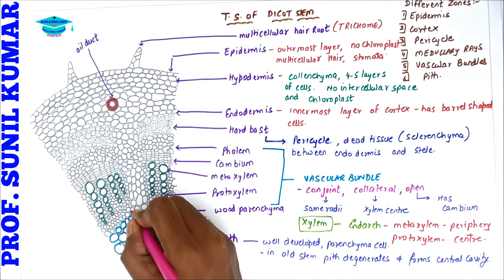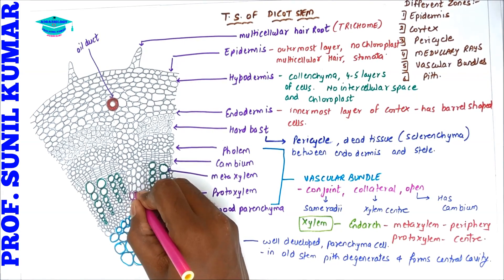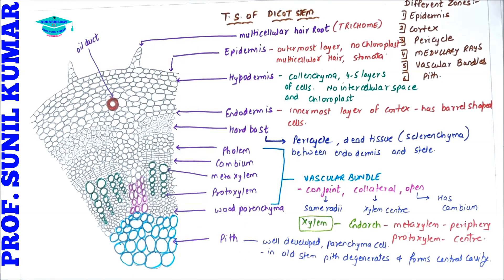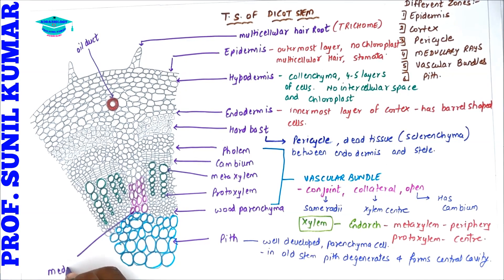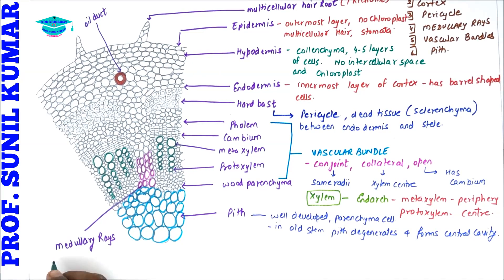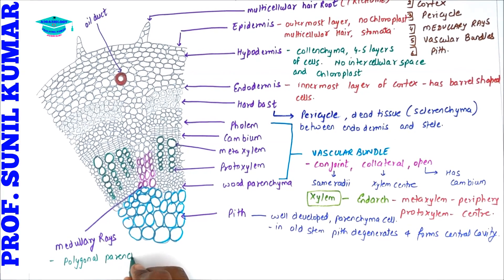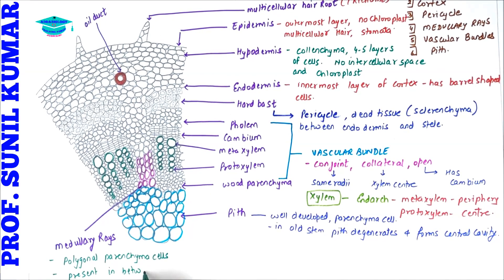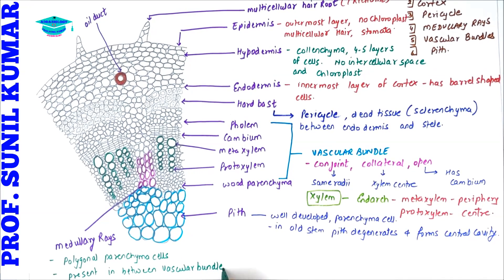Above the pith area we see specialized cells arranged in the form of rays. These cells together form a structure called medullary rays. Medullary rays are made of polygonal parenchyma cells present in between the vascular bundles.